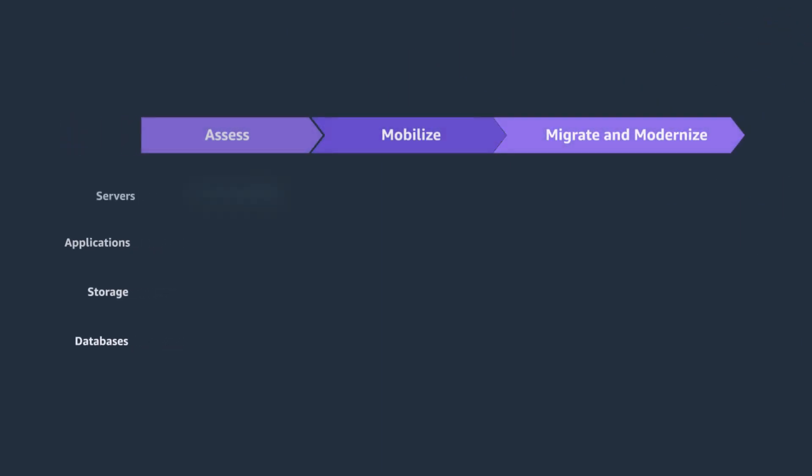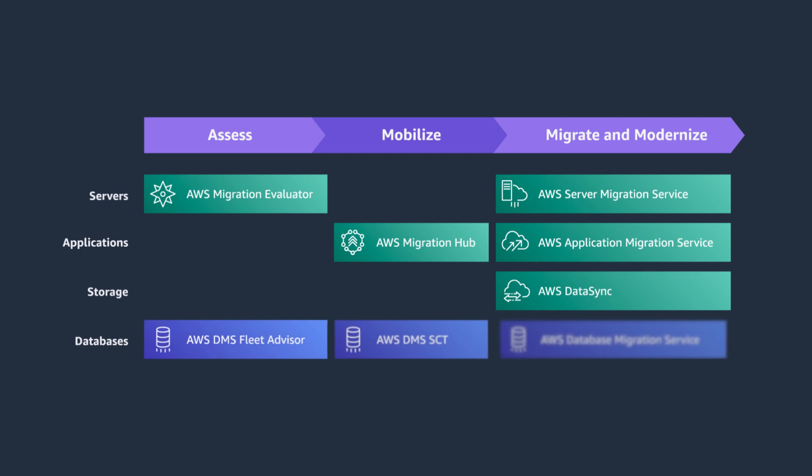When we talk about DMS Fleet Advisor, it helps to look at it in the context of the phases of migration. The first phase is the Assess phase where we're investigating what should be migrated and making a migration plan. The second phase is Mobilize, where we're coming up with a deeper plan and investigating how we're going to execute. The third phase is Migrate and Modernize, where we're actually migrating the data, servers, or applications. AWS has various tools to help with those pieces of migration, including Migration Evaluator and Migration Hub.